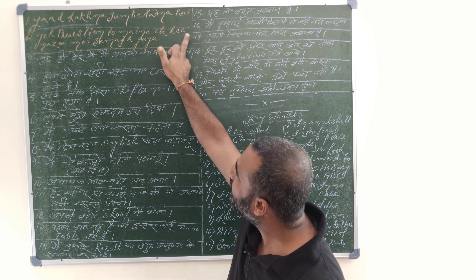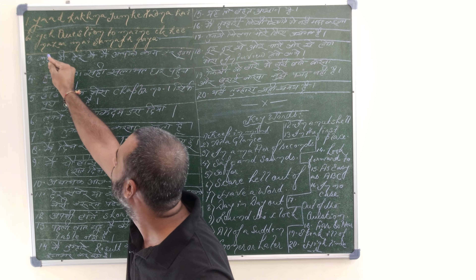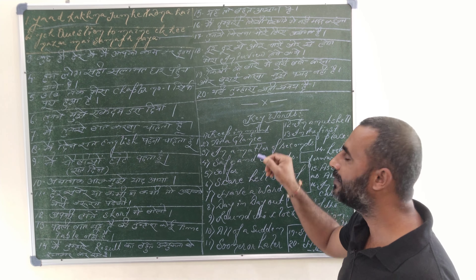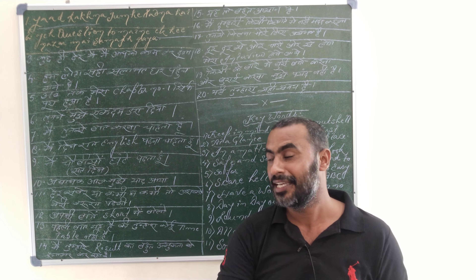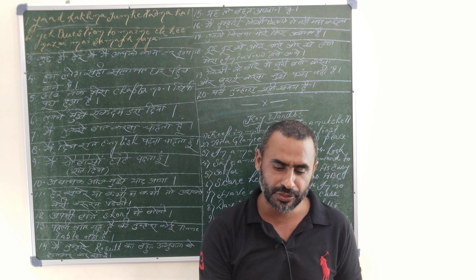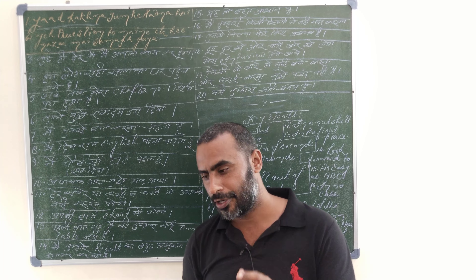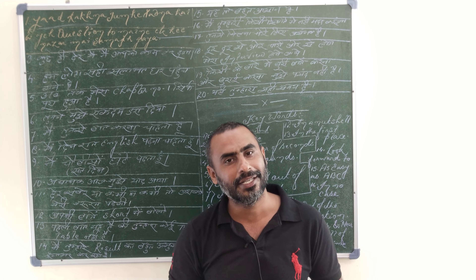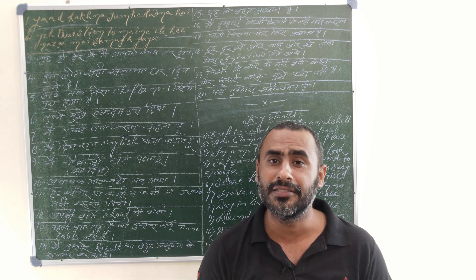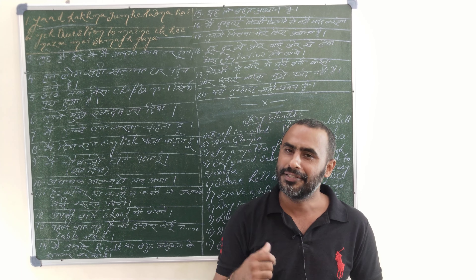The next sentence: 'yeh question toh mein ekhi nazar mein samaj gaya tha' — 'ekhi nazar mein' means 'at a glance.' So: I did understand this question at a glance. I did solve this question orally at a glance. You can also say: you did catch the criminal at a glance. This way you can make a variety of sentences if you have the power of these keywords and know how to use them.